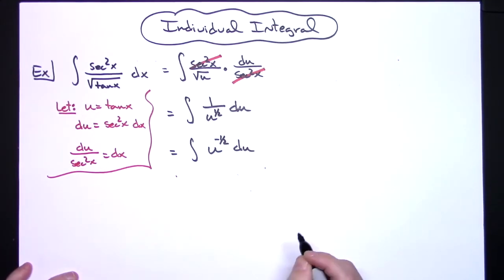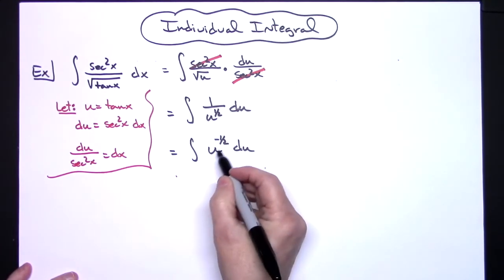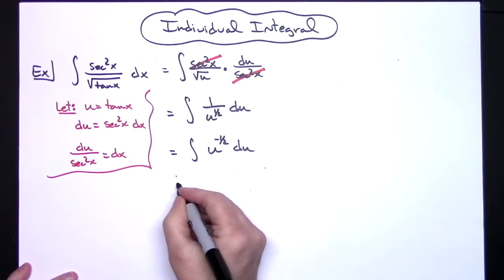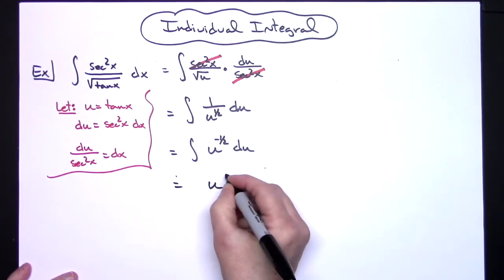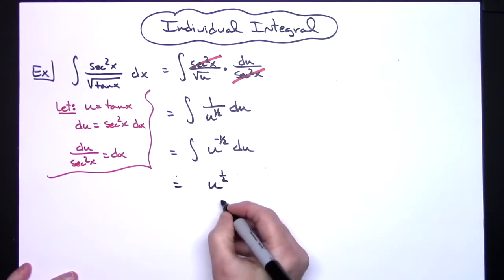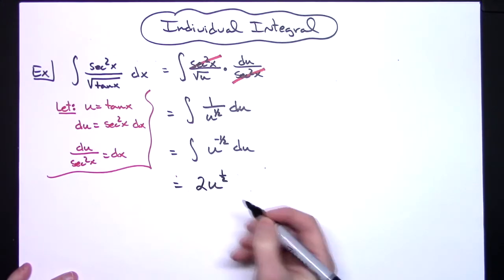At this point it's straightforward integration. We'll add one and end up with u to the one-half power, and then in front that will give us the two.